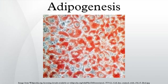Adipogenesis is a tightly regulated cellular differentiation process in which preadipocytes are transformed into differentiated adipocyte cells. Comparing with cells from other lineages, the in vitro differentiation of fat cells is authentic and recapitulates most of the characteristic features of in vivo adipogenesis.